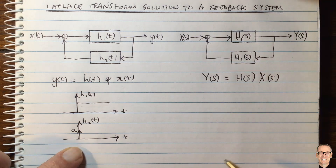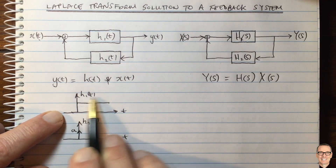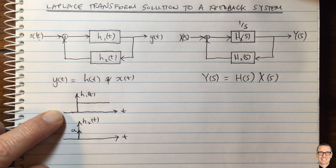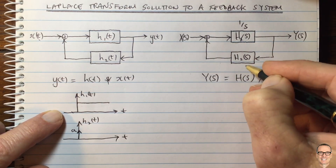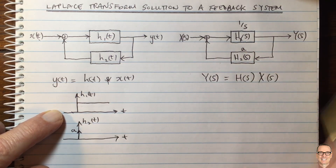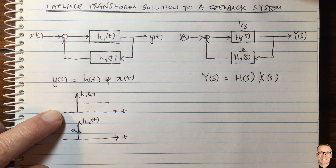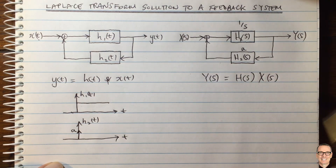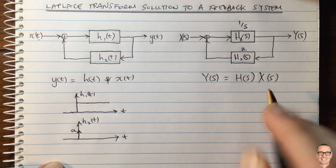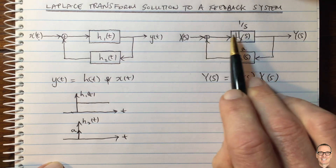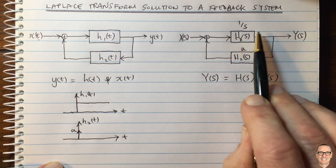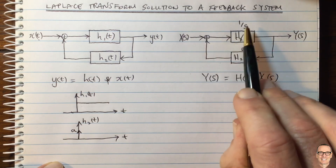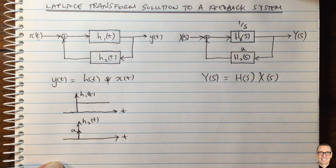In the Laplace domain, H1(S) is given by the Laplace transform of the step function, which is 1 divided by S. The feedback gain is simply given by the constant A. Now we can see how to write an equation for Y(S), knowing that the output of a filter in the Laplace domain is just the multiplication of the input times the transfer function.